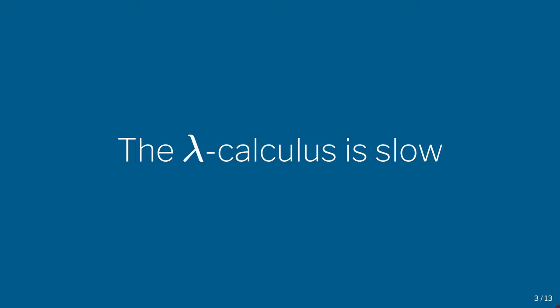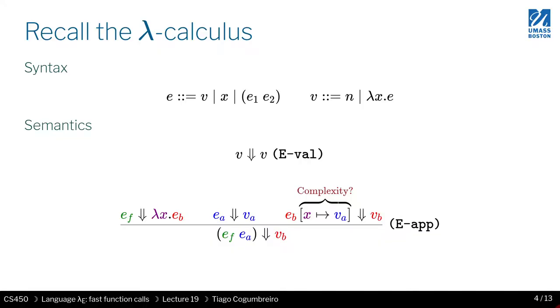We're going to start today's lesson thinking about the performance of the lambda calculus. The statement I want to make is that the lambda calculus is slow and that we can improve its performance. Originally, the intent of lambda calculus is not really to be executed — we use it as a way to specify the central mechanism by which functional programming languages operate. It's more about how you can do something rather than how you should implement something.